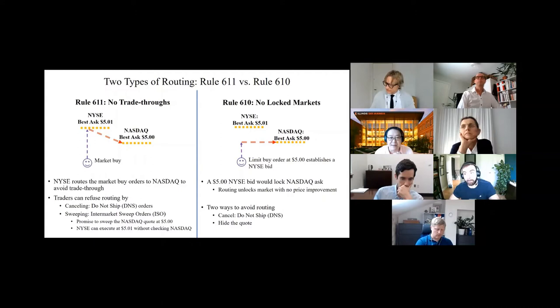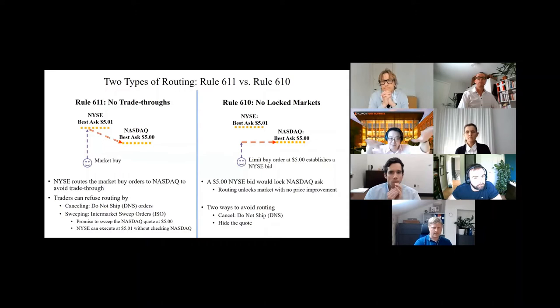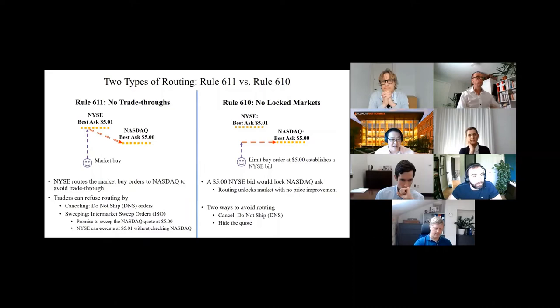Let me introduce the two main rules of Regulation NMS. Rule 611 and Rule 610, both in charge of routing. Rule 611 is probably very famous, called the no-trade-through rule. Suppose you submit a market buy order to New York Stock Exchange. The best ask price now is $5.01. Even if you enter order to NYSE, your order will be routed to NASDAQ because NASDAQ has the best ask price of $5. This is the exchange obligation.